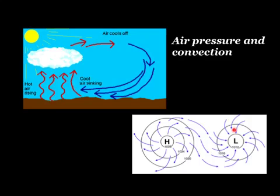A hurricane is a low pressure system and it moves in a counterclockwise motion. All of this movement from high to low is due to convection in our atmosphere.